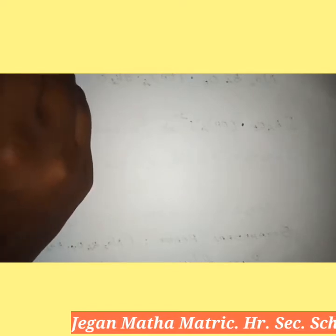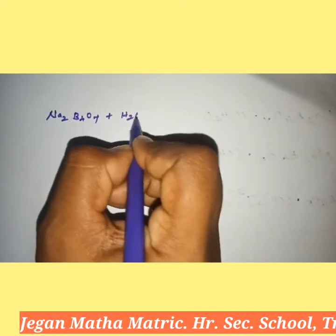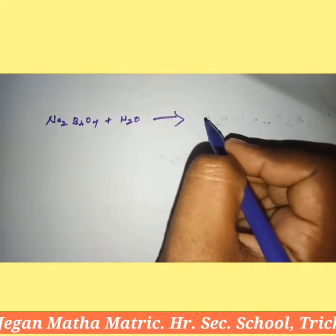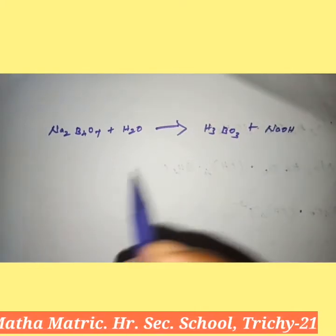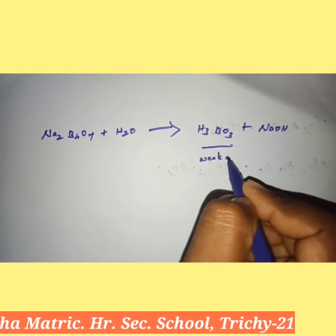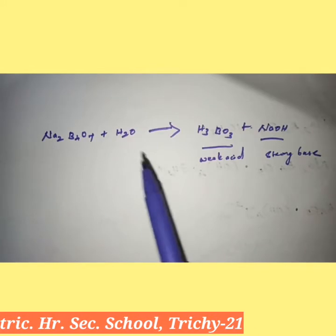Now let us see the properties. Borax is basic in nature and its solution in hot water is alkaline, as it dissociates into boric acid and sodium hydroxide. The formula for boric acid is H₃BO₃, and sodium hydroxide formula is NaOH. So Na₂B₄O₇ reacted with water H₂O gives boric acid H₃BO₃ plus sodium hydroxide NaOH. Here boric acid is a weak acid and sodium hydroxide is a strong base.